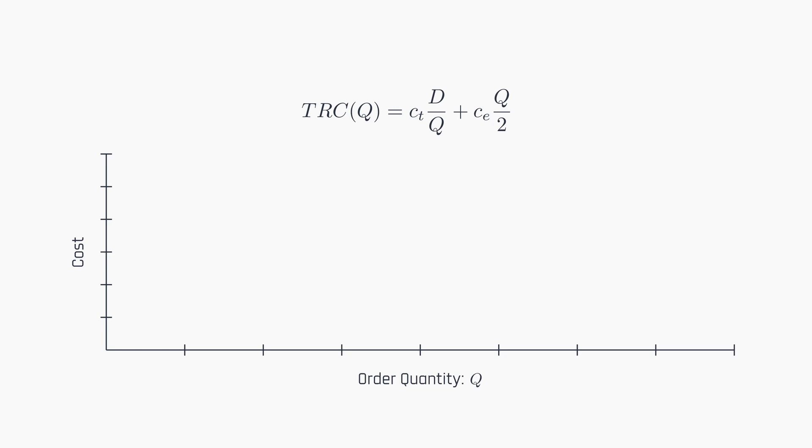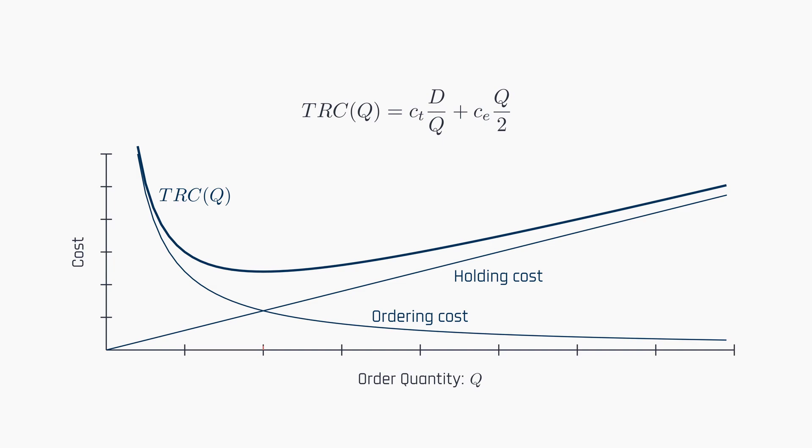Let's plot the function to observe its behavior. As Q increases, the ordering or setup cost decreases, which is logical since larger lots result in fewer orders. Conversely, the holding cost increases with larger Q, leading to a higher average cost for the year, and therefore more capital and storage costs, as previously discussed. We can visually observe that the total relevant cost appears to be the least when both cost components are roughly equal.